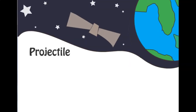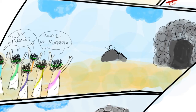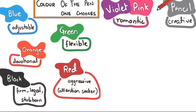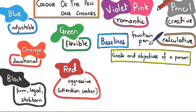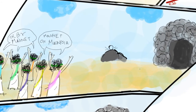Welcome to the bonus round of quadratic equations. Graphology — magnesium forms the basis of a branch of mathematics called calculus. Pencil: this shows that the person is a creative person. Fountain pen: this shows that the person is calculative. Baseline resembles the goals and objectives of a person.